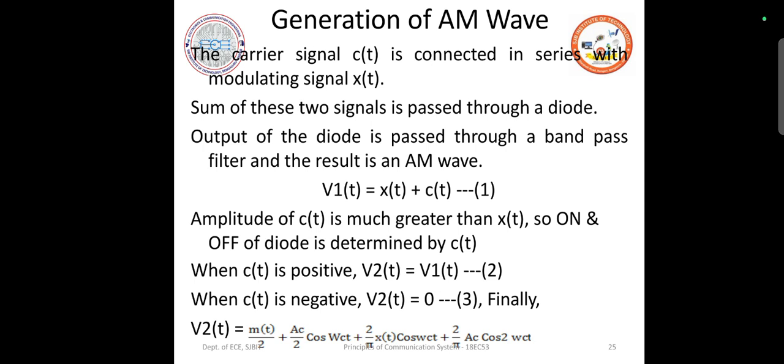The input V1(t), as written in the previous square modulator, is a combination of x(t) and c(t). x(t) is the modulating signal, c(t) is the carrier.